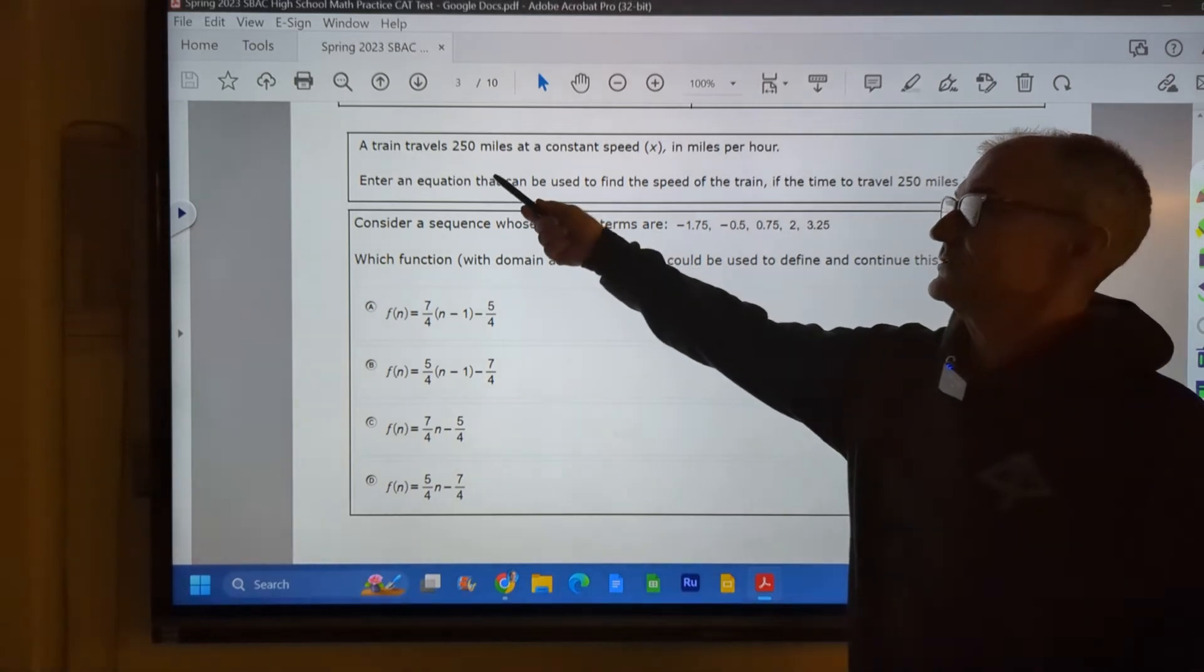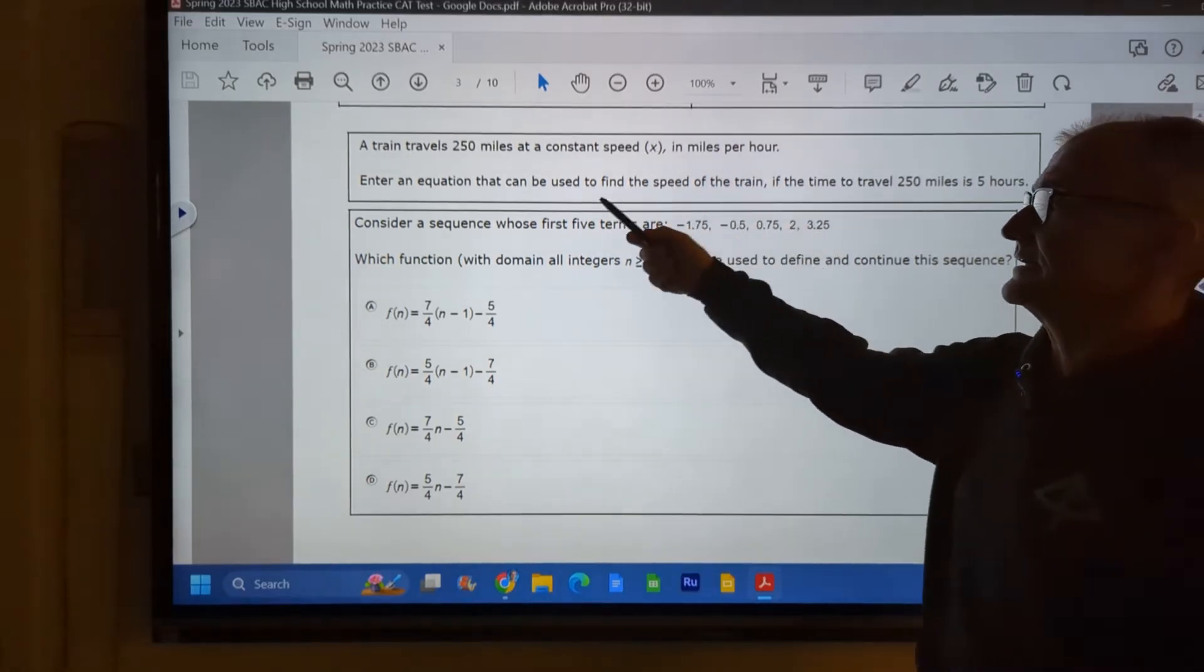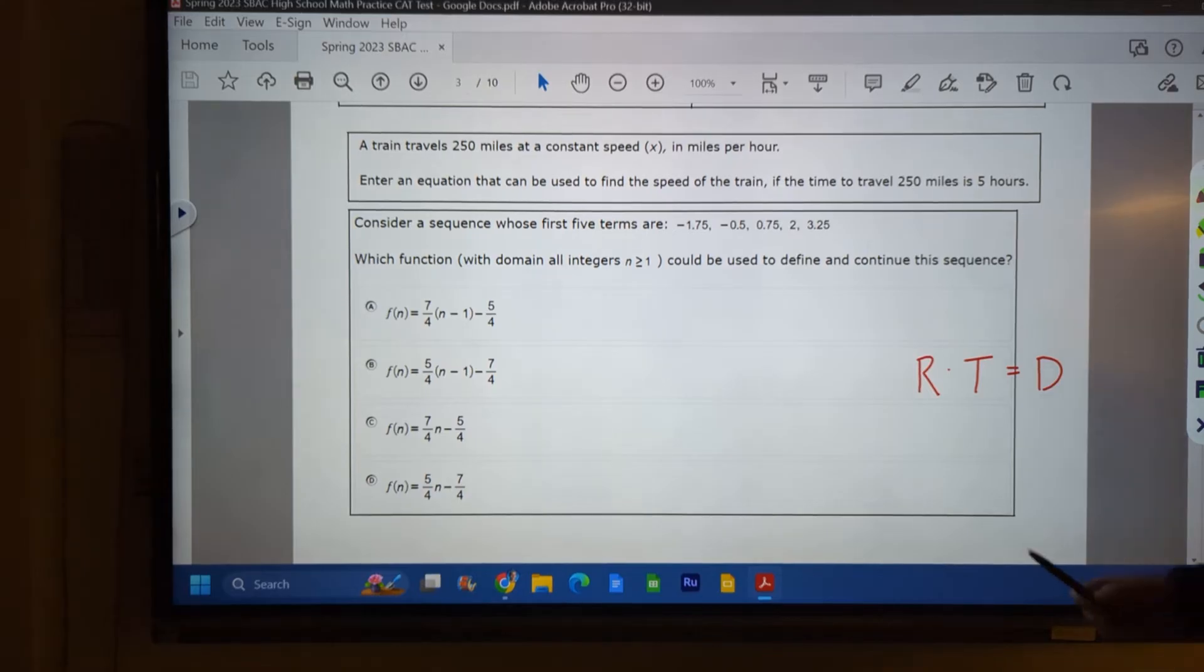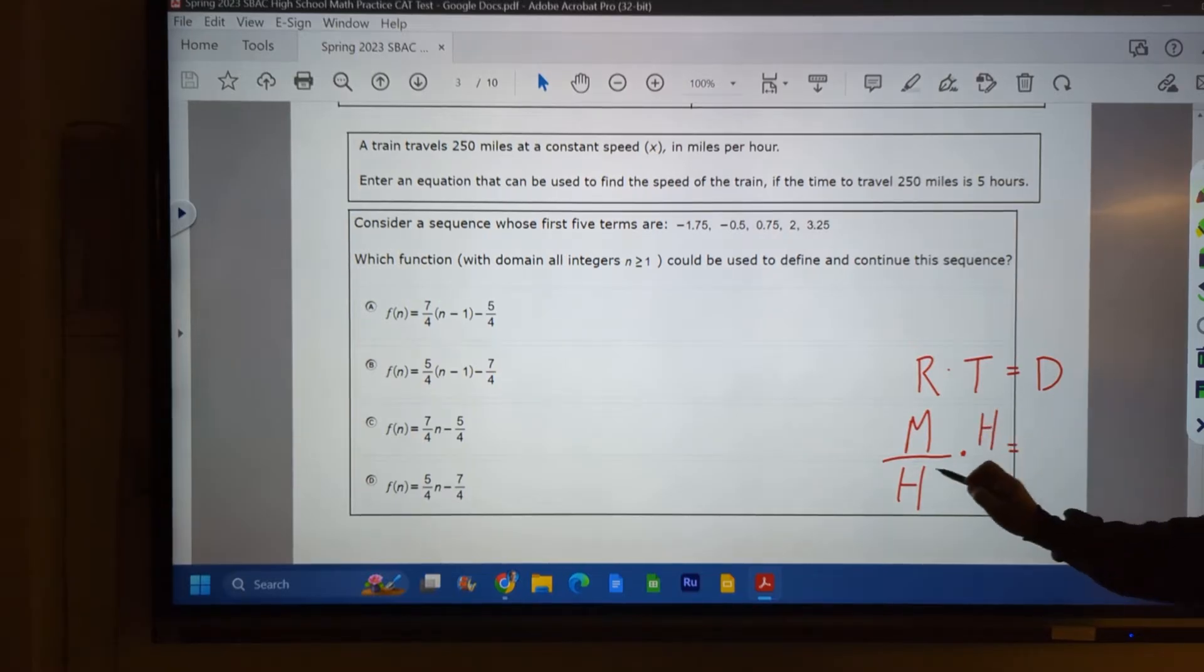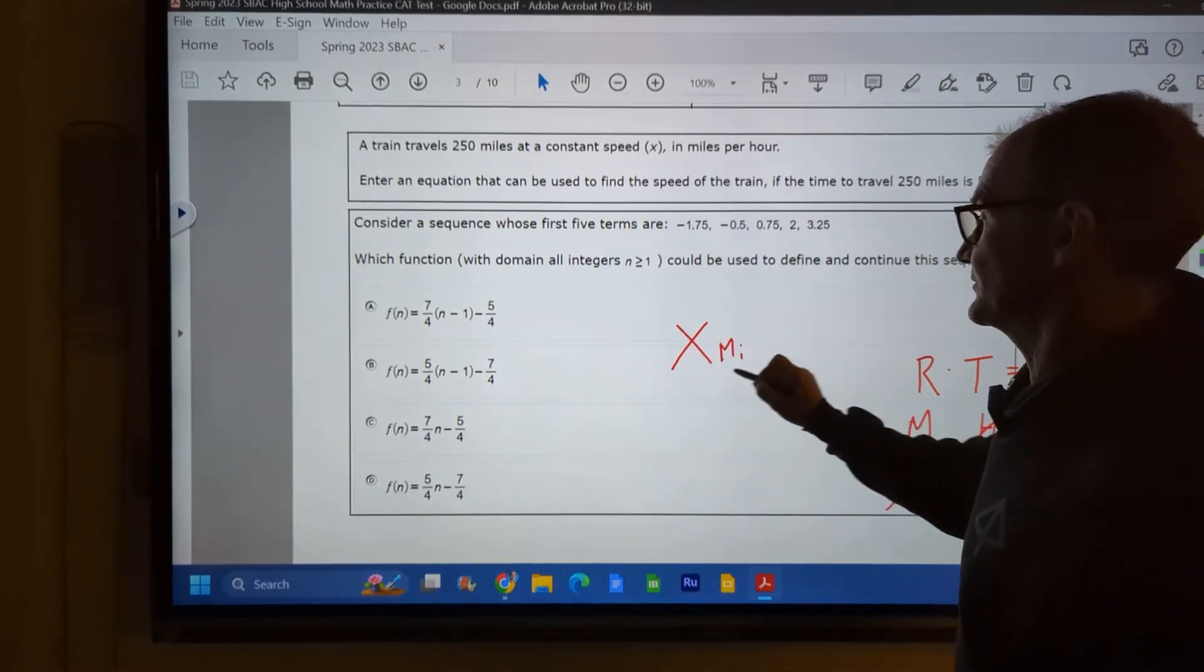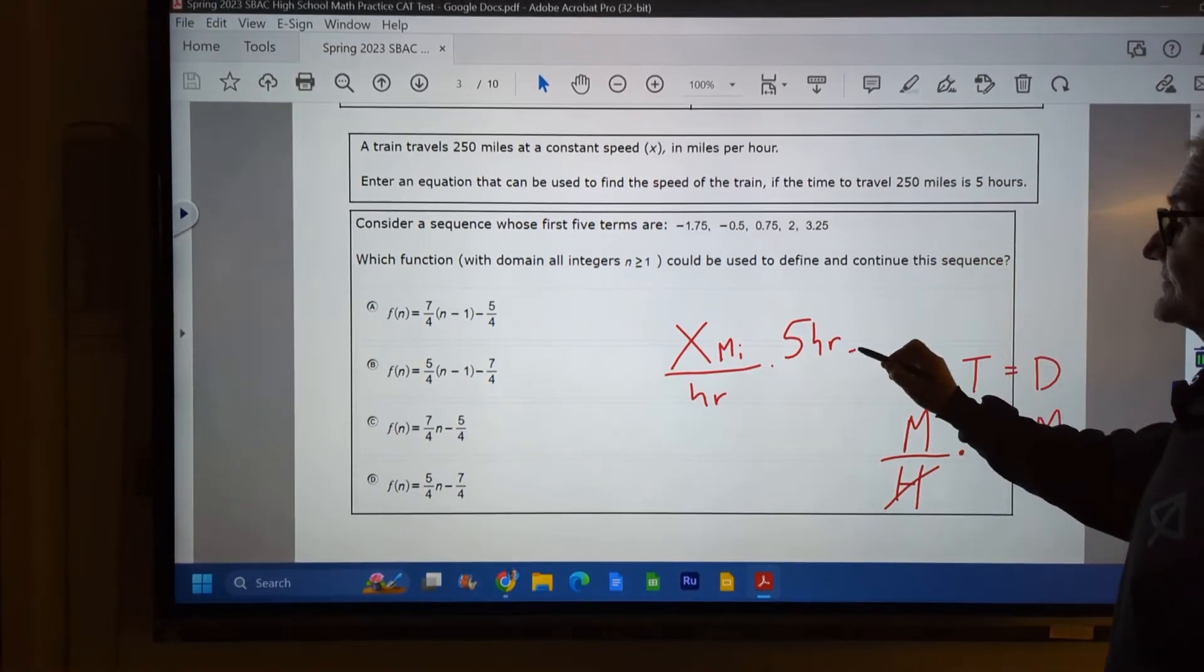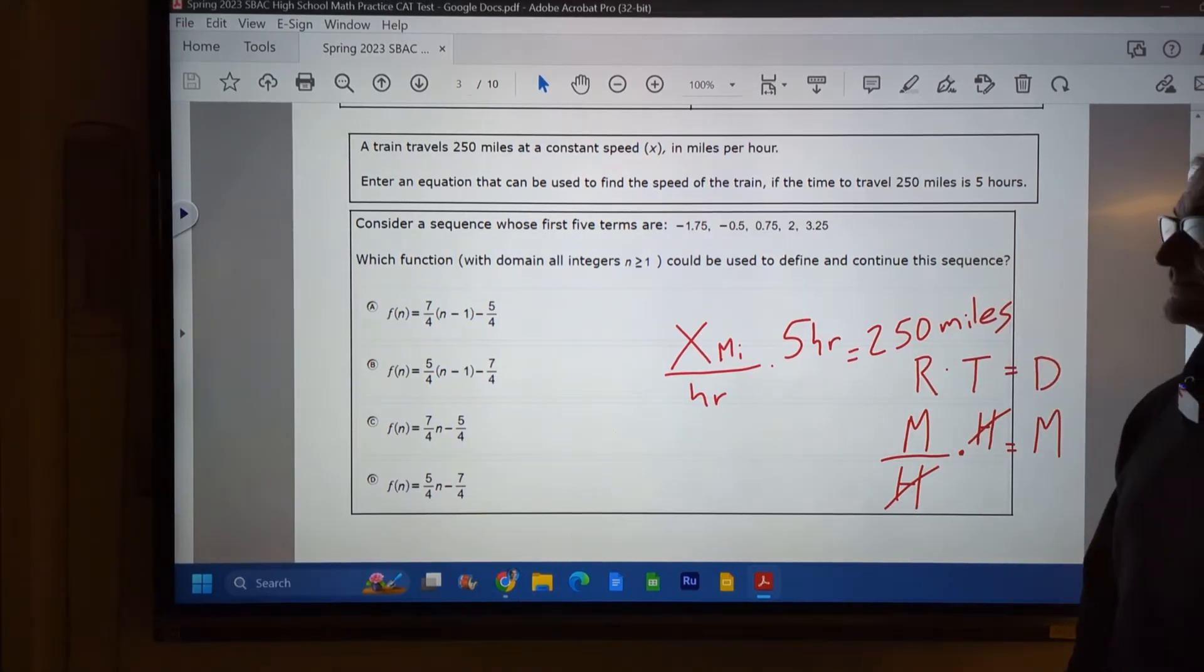Okay, let's take a look at this problem. If a train travels 250 miles, that's a distance, at a constant speed x, that's miles per hour, so that's a rate. Enter an equation that can be used to find the speed of the train if the time to travel 250 miles in five hours. So rate times time equals distance. And that kind of makes sense because I have a rate of miles per hour times a time, say, in hours. And these would cancel, and that would be equal to a distance miles. So we have a rate of x miles per hour times our time of five hours, and that should be equal to a total of 250 miles. So there's an equation right there to represent that scenario.